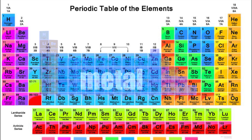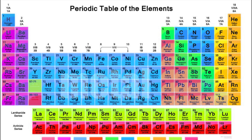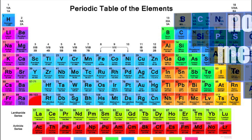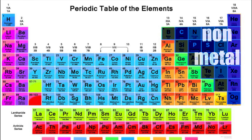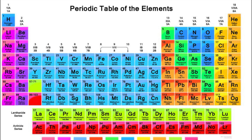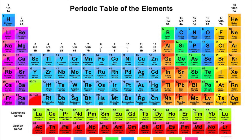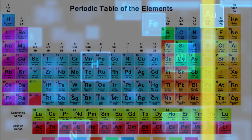Elements on the left-hand side of the periodic table are generally metals, while elements on the right-hand side are generally non-metals. It is called a periodic table because of its repeating pattern — each period contains eight elements and the pattern repeats in the next row.